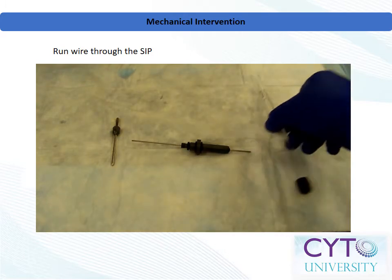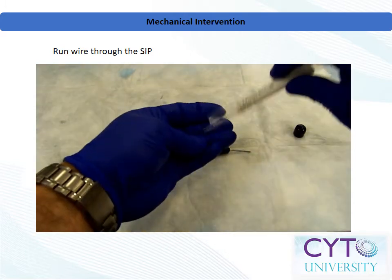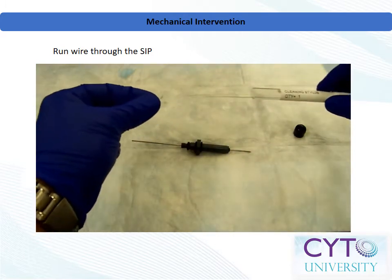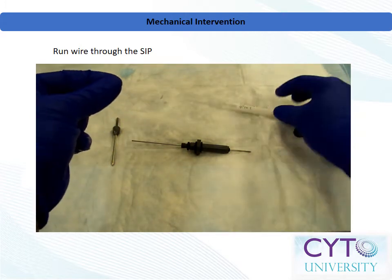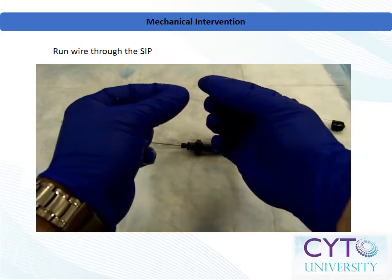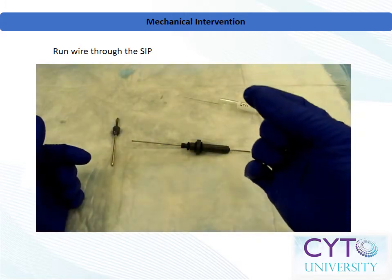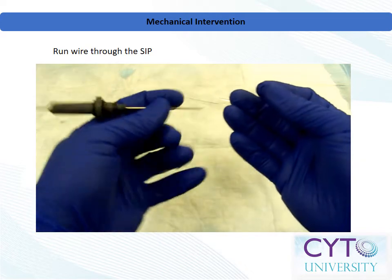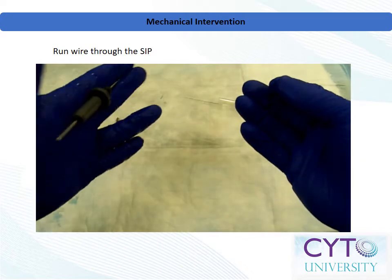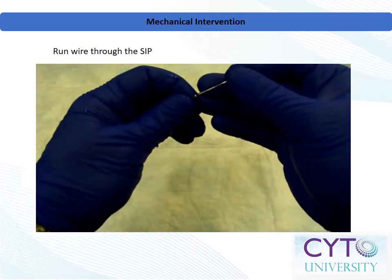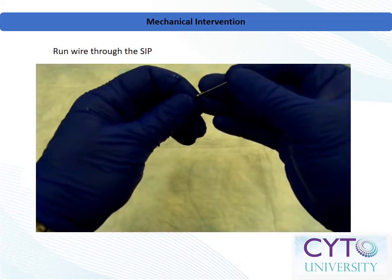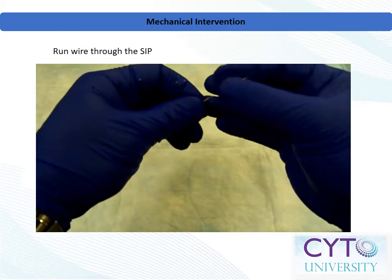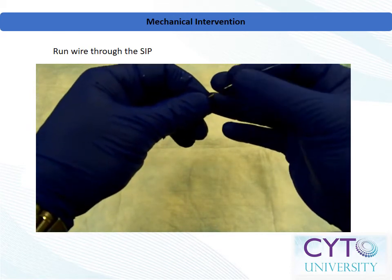As a third option, carefully run a steel stylet through the sample injection tube by inserting at the flat end and pushing in the direction of flow. Be sure the stylet does not have any bends or kinks. If you feel any resistance, immediately stop and consider using one of the two previously described methods before retrying the stylet.